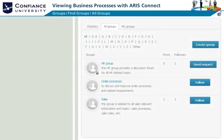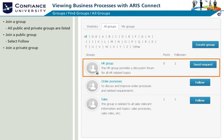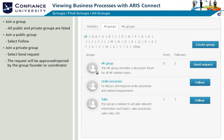The group section gives you an overview of all available groups. You can join any of the public and private groups which are listed. Join a public group by clicking on Follow; join a private group by selecting Send Request. The request will be approved or rejected by the group founder or coordinator.